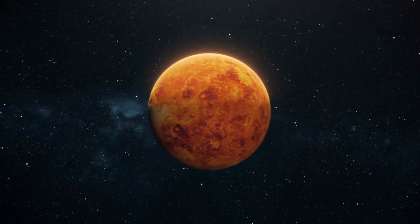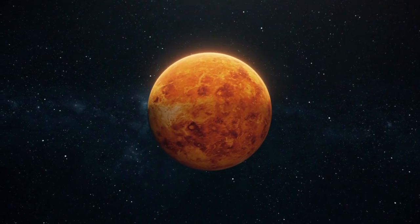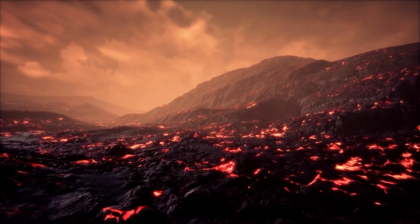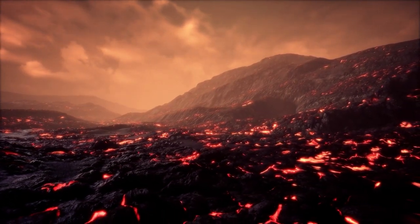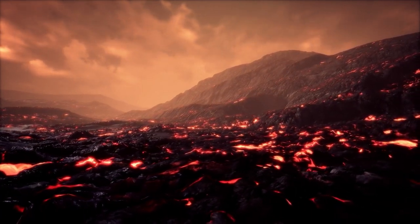Venus has no moons or rings, which is unusual for a planet of its size. Venus has the most volcanoes of any planet in the solar system, with more than 1,600 known volcanic structures.